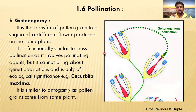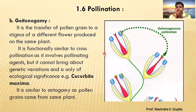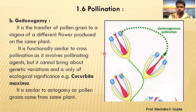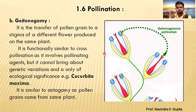In autogamy, we have seen one plant and one flower. The pollen grain is transferred to the stigma of that same flower — it transfers within the same flower. This condition is called autogamy.